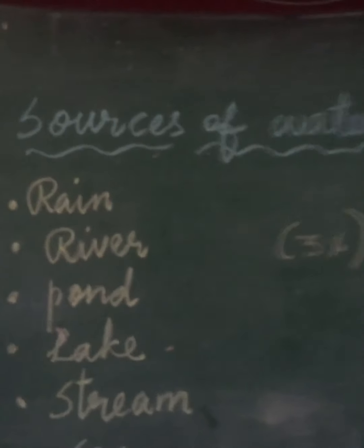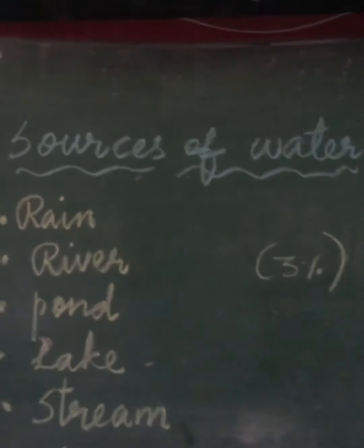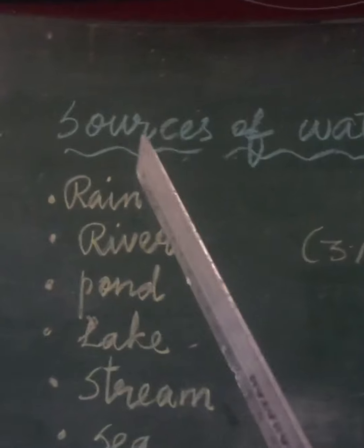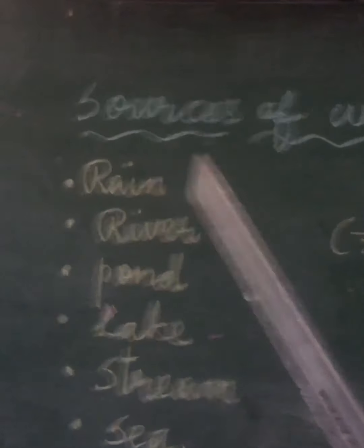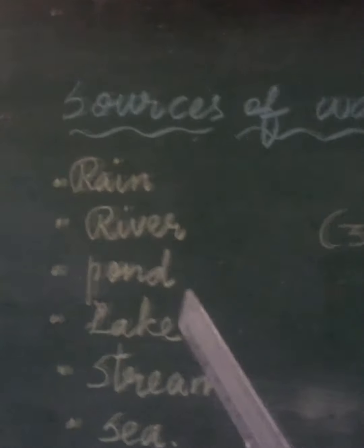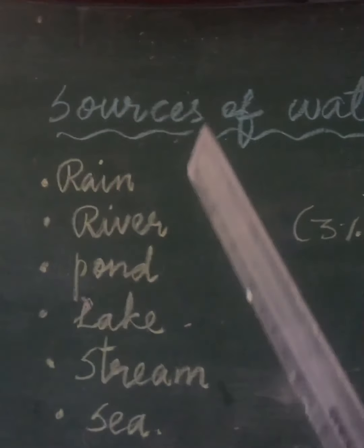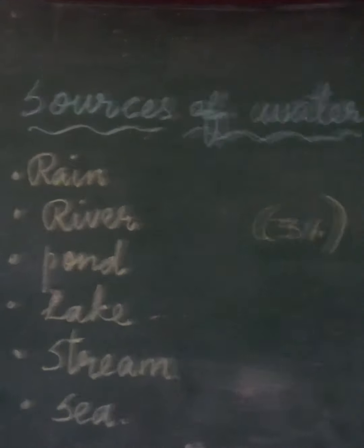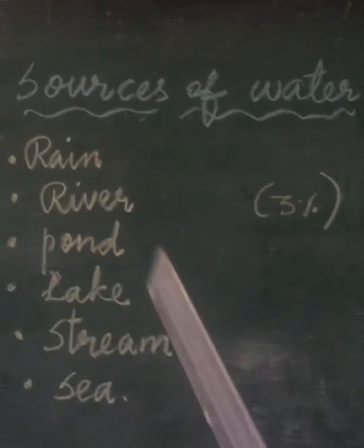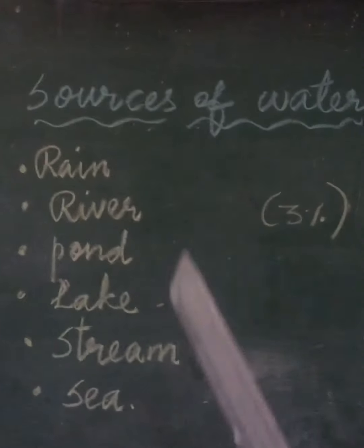Now let us learn the sources of water. We get water from various sources — rain, river, pond, lake, stream, and sea. So these are the main important sources of water.